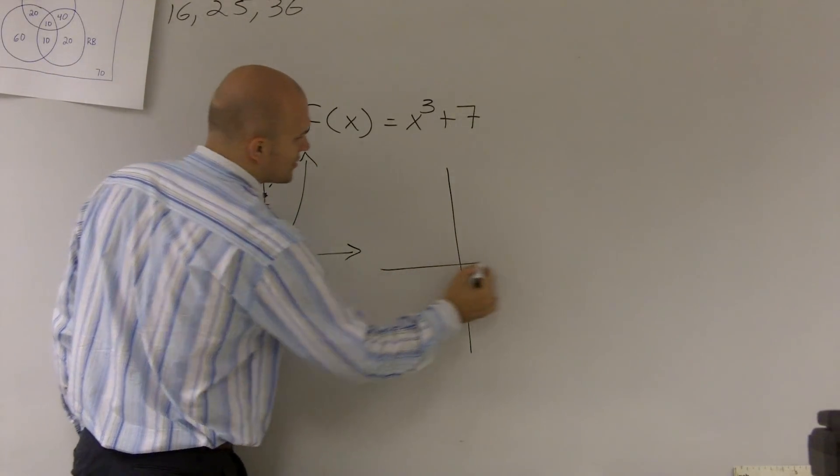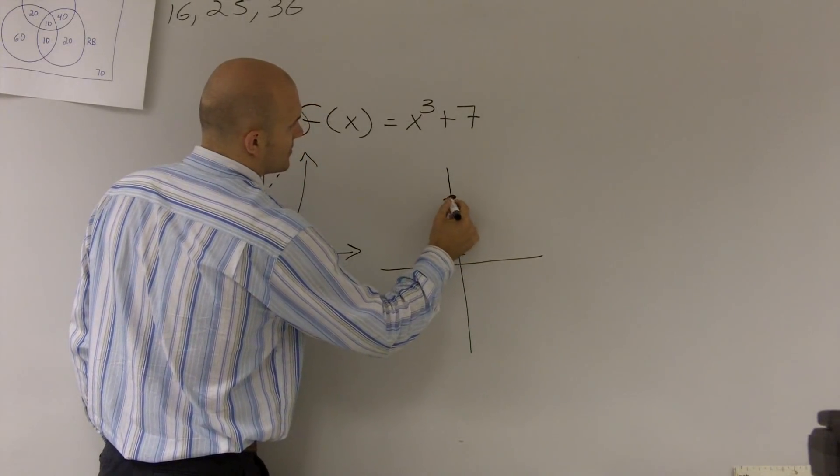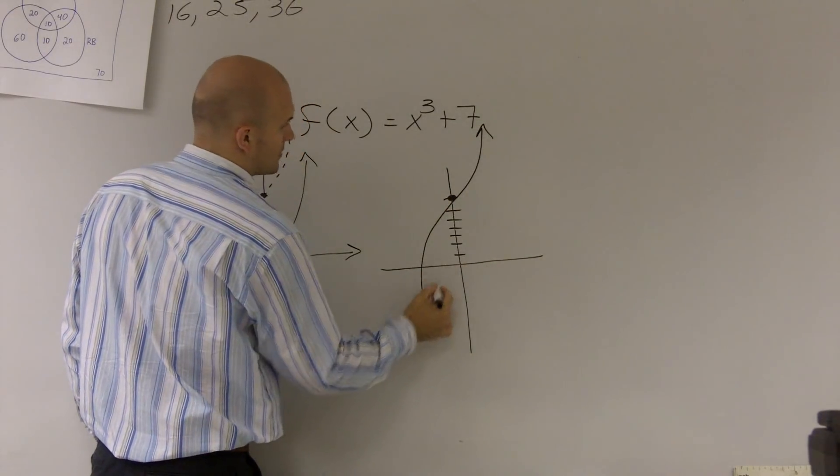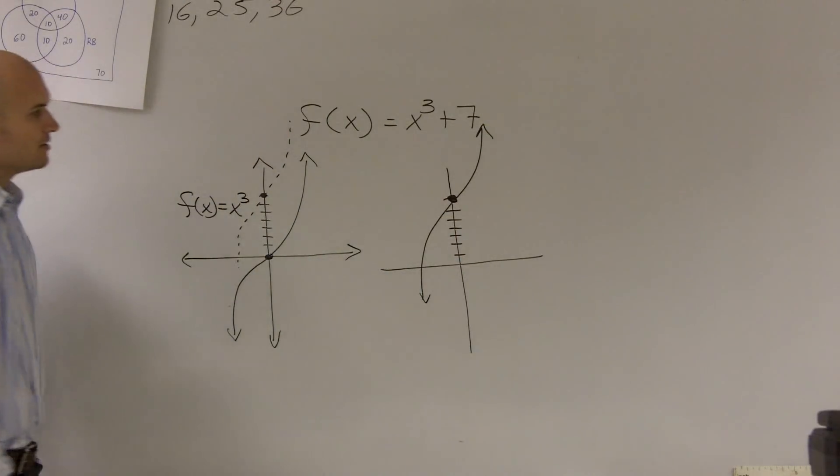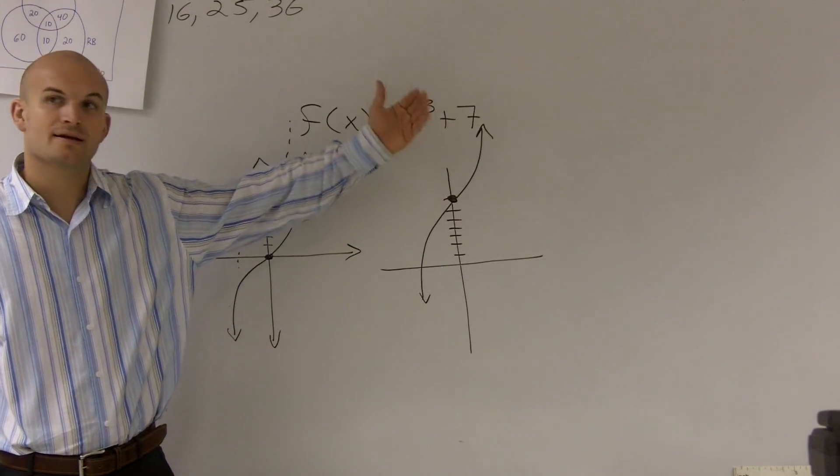So if I wanted to redraw this graph, 1, 2, 3, 4, 5, 6, 7. So that's really all we're doing when we're adding a plus 7.